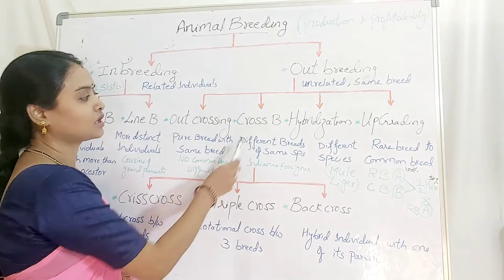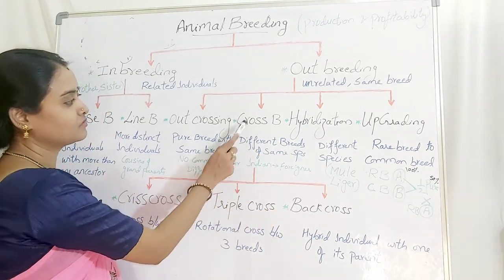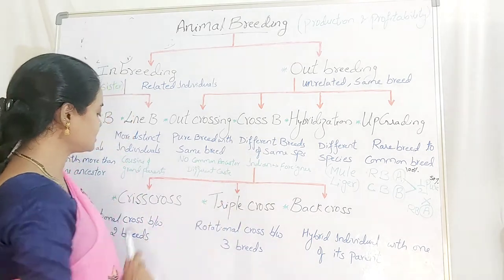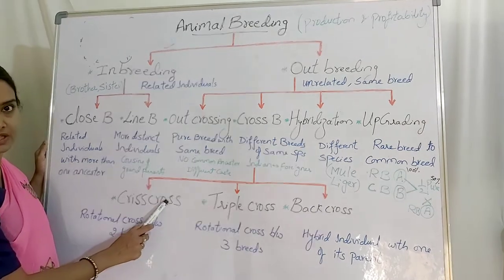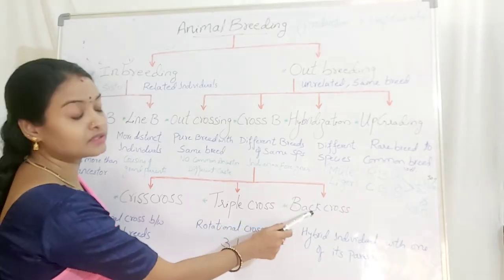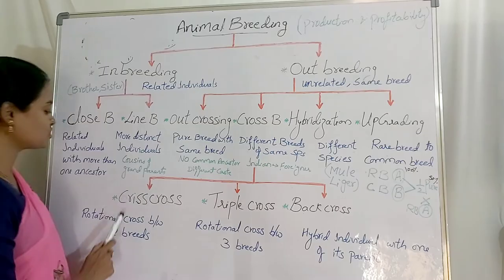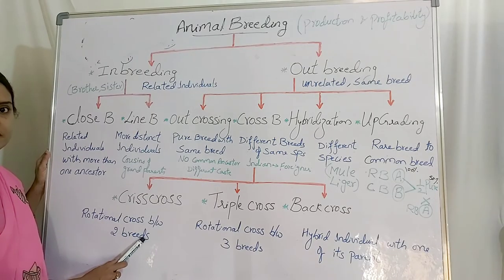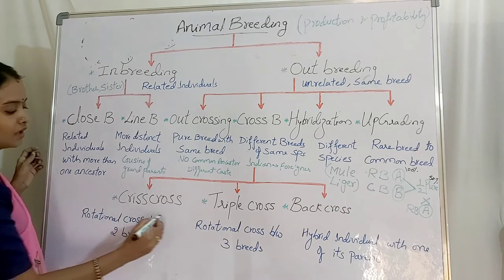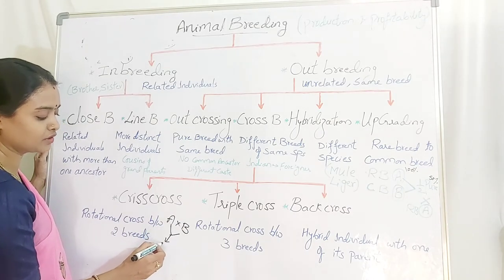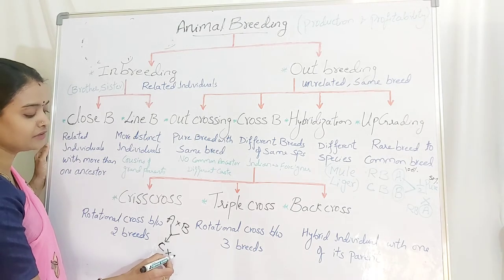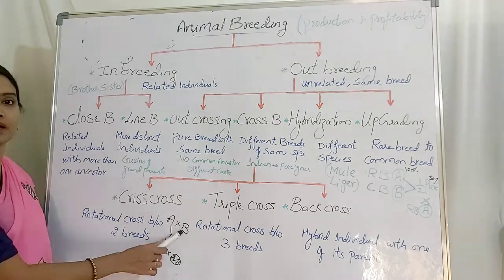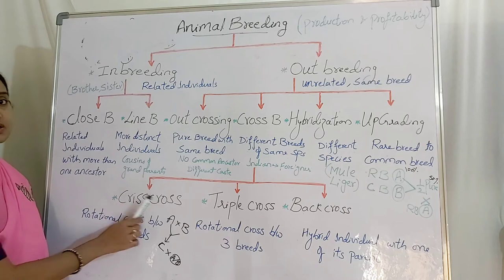Crossbreeding is again classified into three types. The first is crisscross breeding — a rotational cross between two breeds. You cross A with B and the progeny C is again crossed with either parent A or B. So it is a rotational cross between two breeds, and two breeds are involved in crisscross breeding.